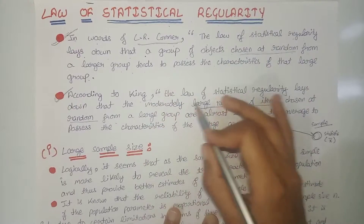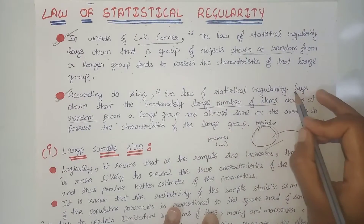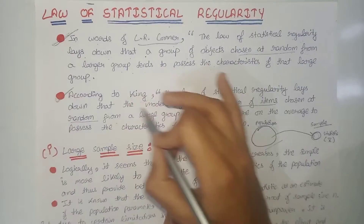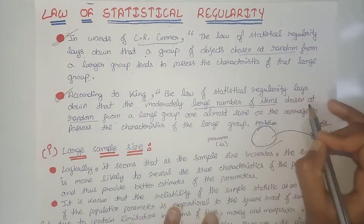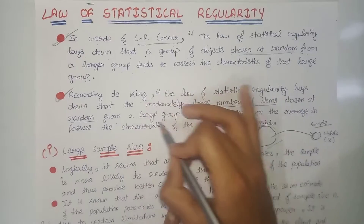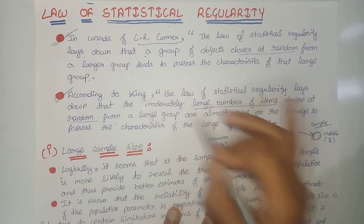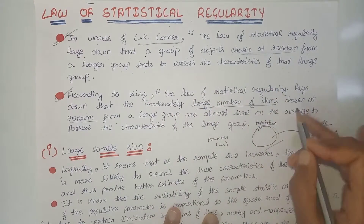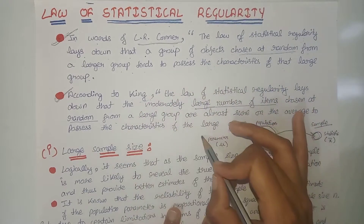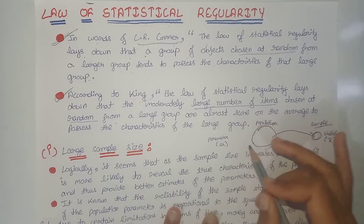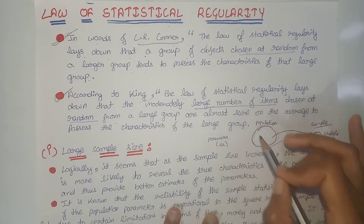The second statement is of King. He says that the Law of Statistical Regularity lays down that a moderately large number of items chosen at random from a large group are almost sure, on the average, to possess the characteristics of the large group.